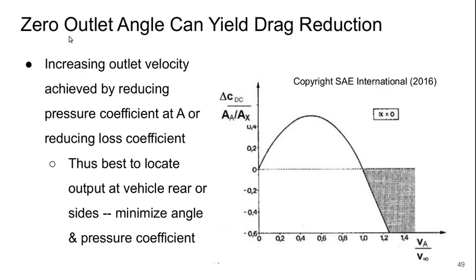We can also, if we have a zero outlet angle which reduces mixing loss, we can actually get a drag reduction associated with this cooling flow. So we increase the outlet velocity by reducing the pressure coefficient at A or reducing the loss coefficient. So that's one way how we would move along this axis. And we see that if the velocity at A gets high enough, basically it gets higher than V infinity, then all of a sudden the delta Cd becomes negative.